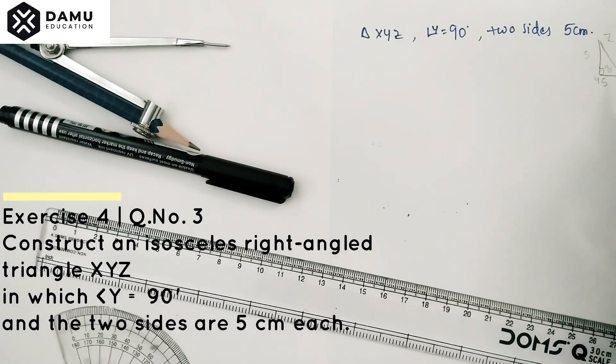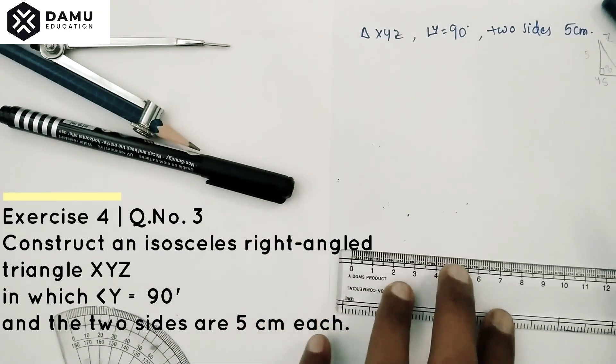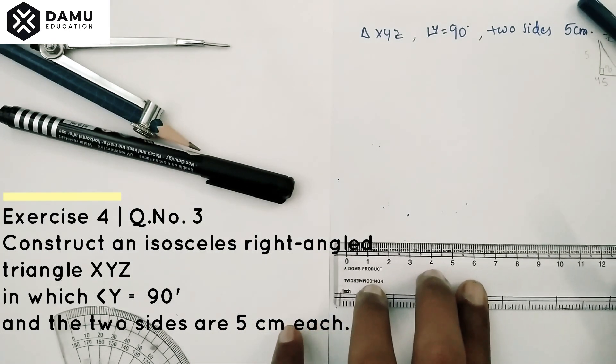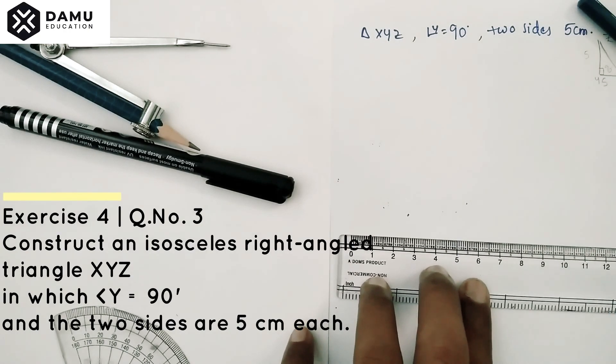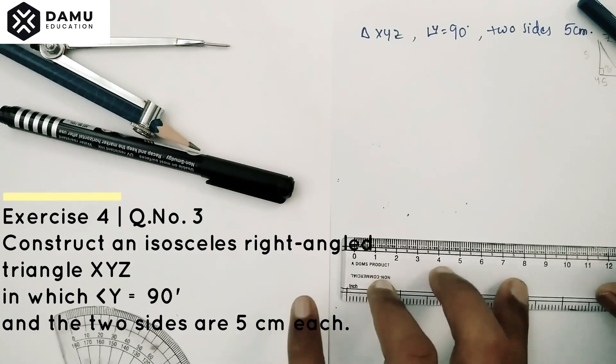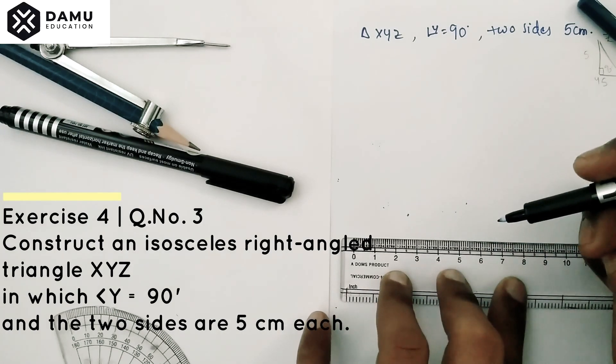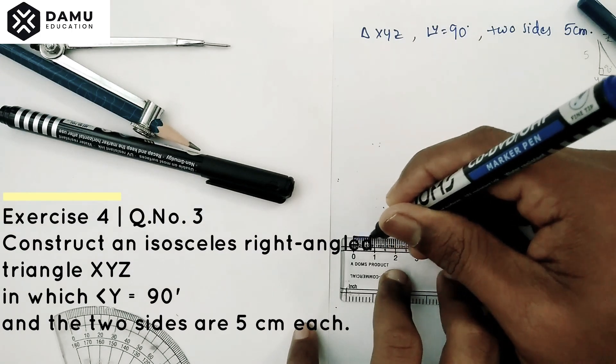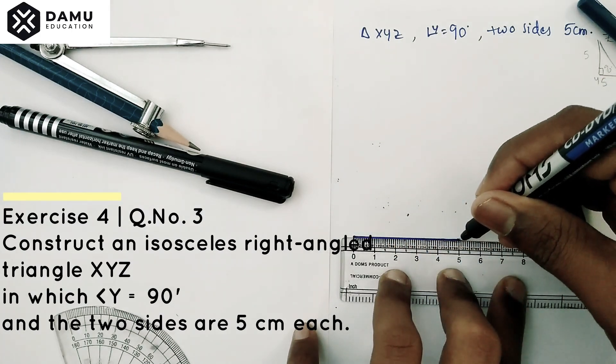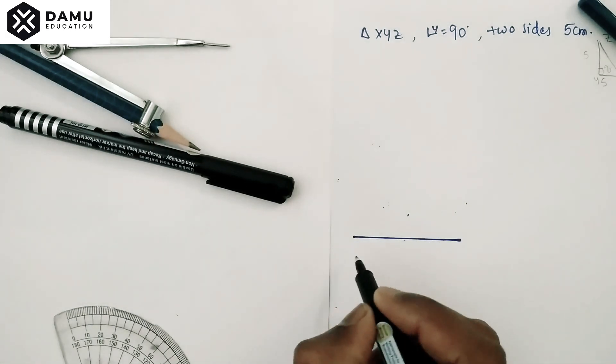Now we're going to construct the actual diagram. We're going to draw 5 centimeters. Keep your scale horizontally, from 0 to 5 centimeters. This is YX, that is 5 centimeters.